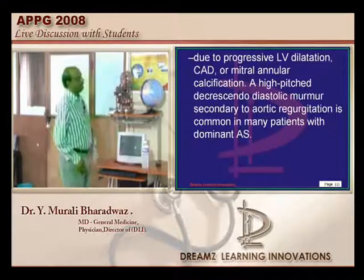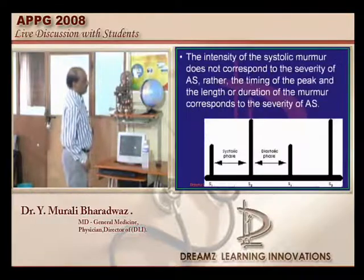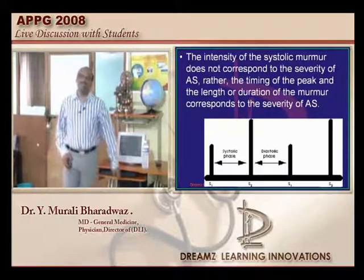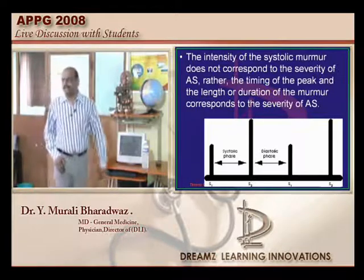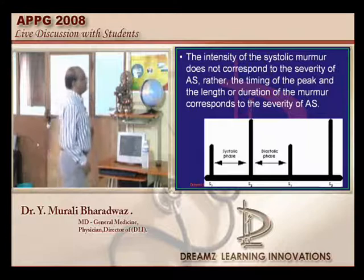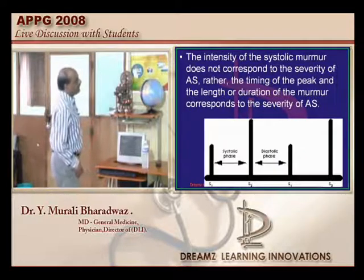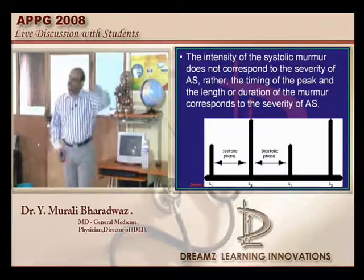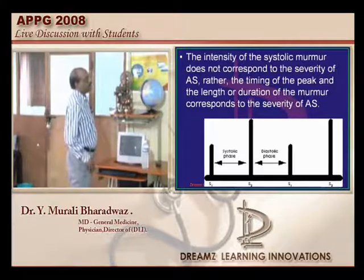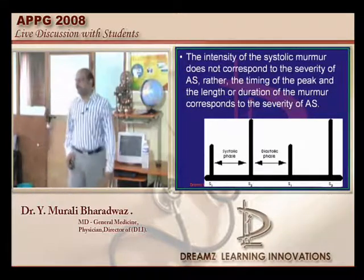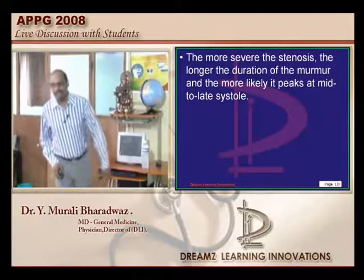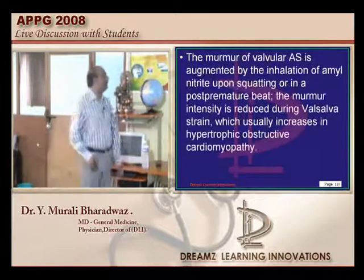Regarding S2 in aortic stenosis: a loud S2 is a feature of aortic regurgitation, whereas a soft S2 is a feature of aortic stenosis and pulmonic stenosis. Soft A2 and soft P2 are caused by aortic stenosis and pulmonic stenosis respectively. Therefore, loud S2 is not a feature of aortic stenosis.